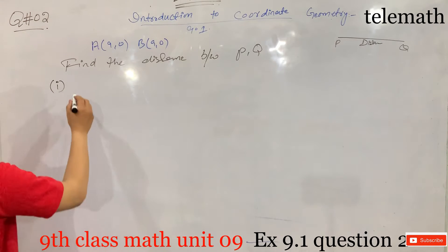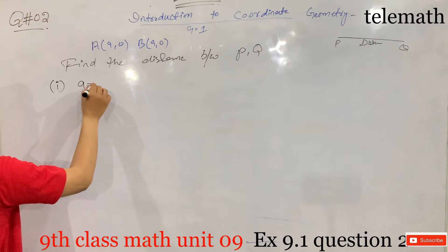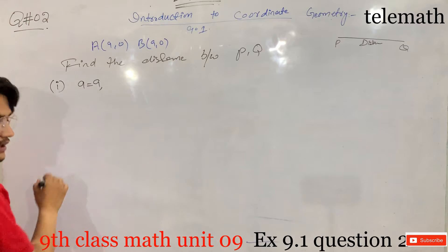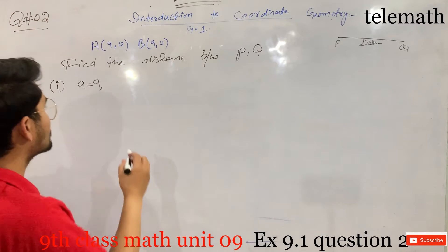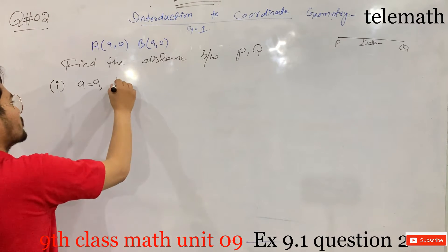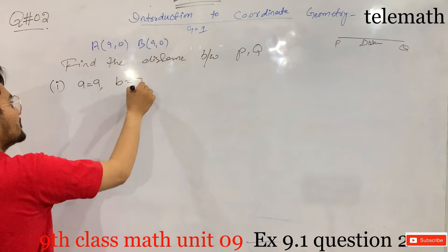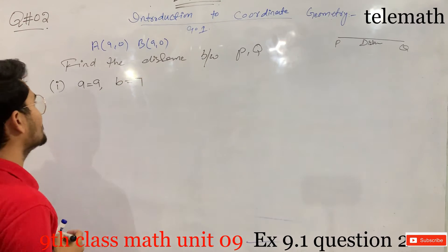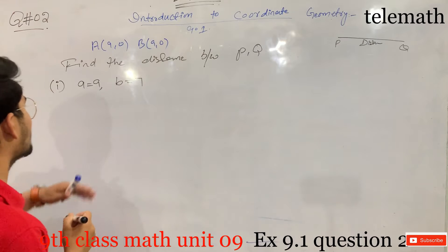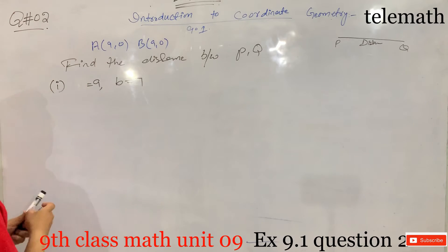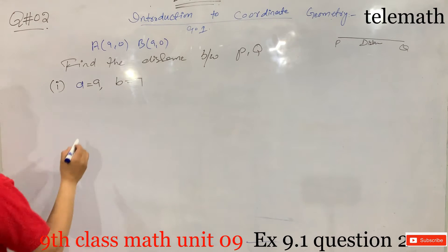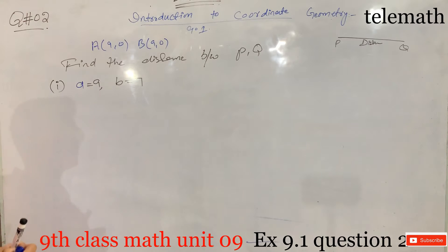For the first part, a is equal to 9 and b is equal to 7. So we need to find the distance using a equals 9 and b equals 7.